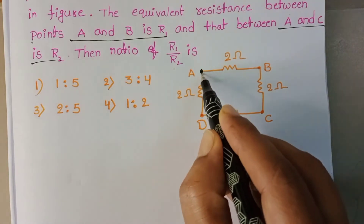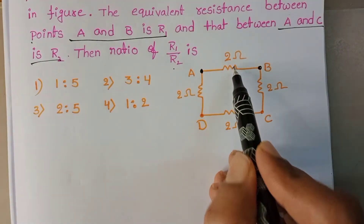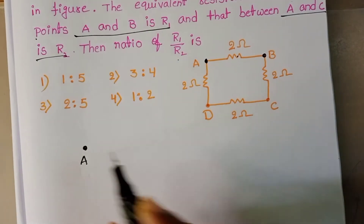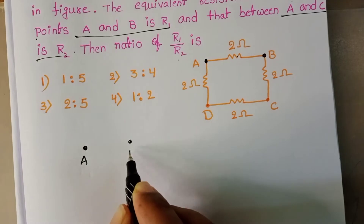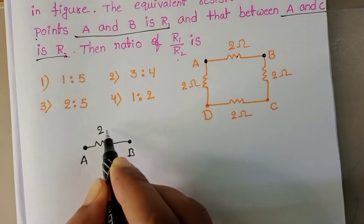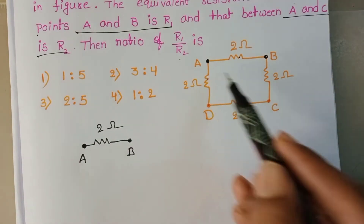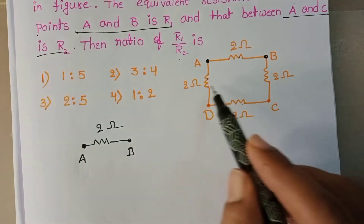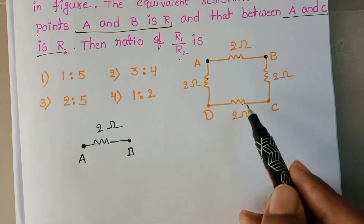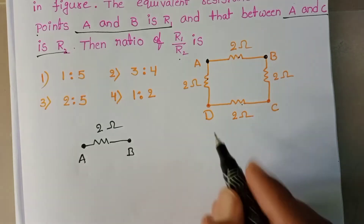Between points A and B, one 2 ohm resistor is connected directly. Additionally, three 2 ohm resistors are also connected between A and B, and these three resistors are in series.